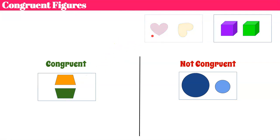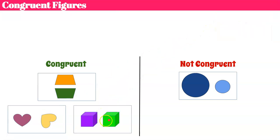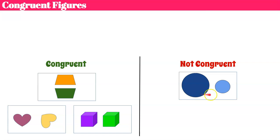The hearts: we're going to put these in the congruent category because this yellow heart is turned, but if I turned it back, it would sit perfectly on top of the pink heart. And here we have our cubes — the green cube has just been moved over to the right, but we can tell they're both cubes with the same shape and the same side length, so those would also be congruent. So again: congruent means same size and same shape; not congruent means different shape or different size.